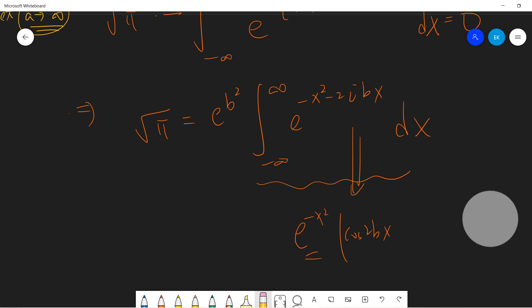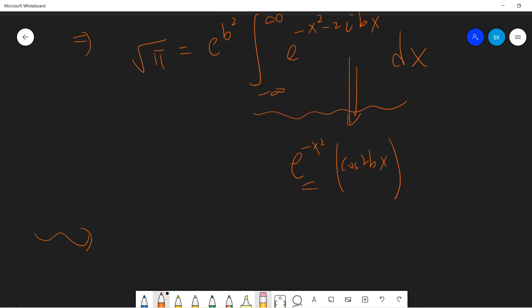Finally we got square root of pi times exponential negative b squared equals the integral from negative infinity to infinity of exponential negative x squared cosine 2bx dx. Very nice! We didn't do anything stupid, so we can still solve it.